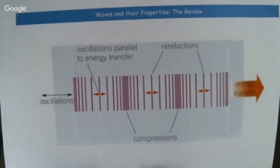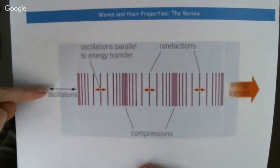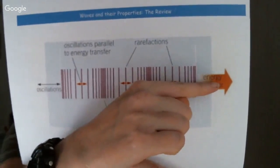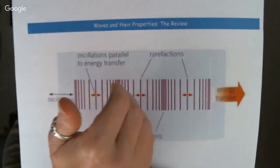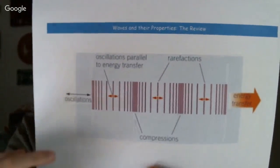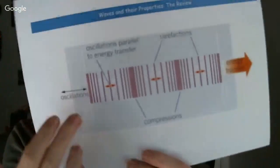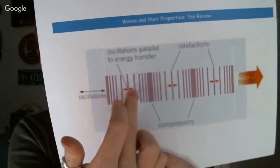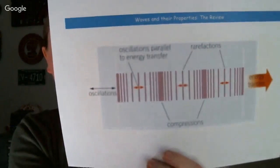The second type are longitudinal waves. The direction of travel is the same direction as the oscillations. You probably had this demonstrated with a slinky in school — you give it a little push and the coils get closer together. Where the bits are close together are called compressions, and the bits where it's more spaced out are called rarefactions.